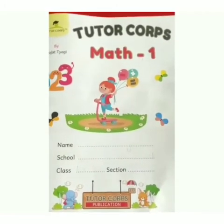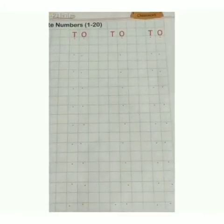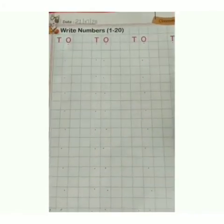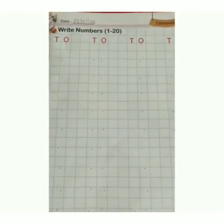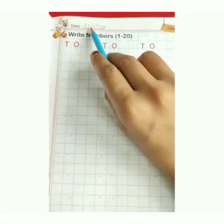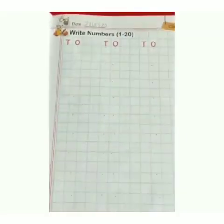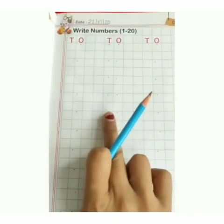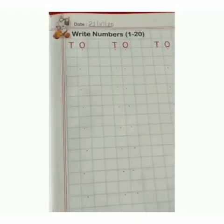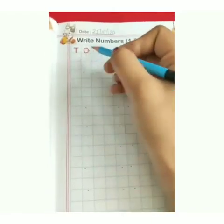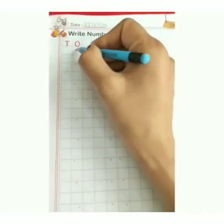Now it's time for the Maths workbook. Take out your maths workbook and open page number 5. Today we will write numbers from 1 to 20, as you have done already in your notebook — so today we will do it in your workbook. Mention your date first: 21-07-20. Then start writing numbers 1 to 20. I will show you how to write in the first set, and in the second set you have to write by yourself. Let's start from the dots — here are given some dots, you have to start from your dot.